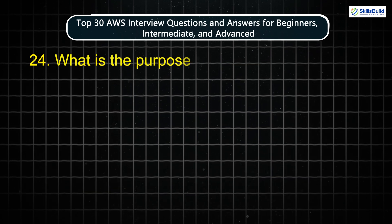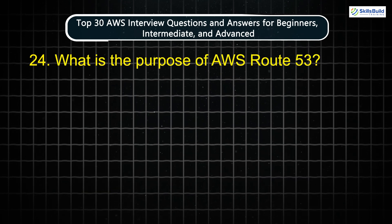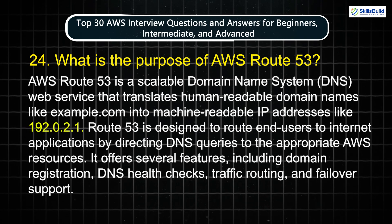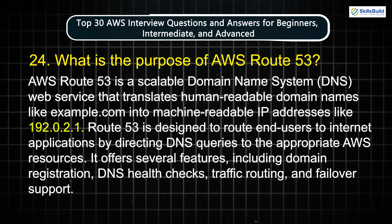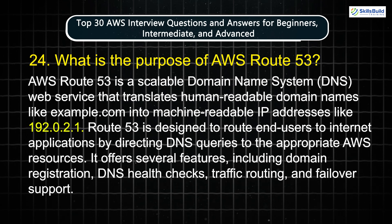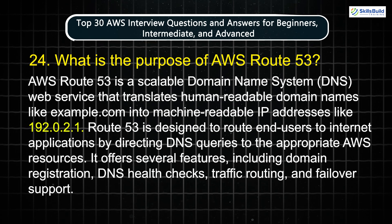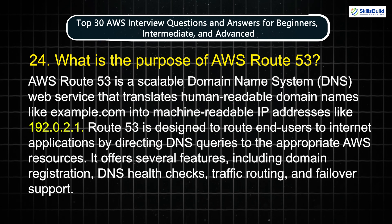Question 24: What is the purpose of AWS Route 53? AWS Route 53 is a scalable domain name system web service that translates human-readable domain names like example.com into machine-readable IP addresses like 192.0.2.1. Route 53 is designed to route end users to Internet applications by directing DNS queries to the appropriate AWS resources. It offers several features including domain registration, DNS health checks, traffic routing, and failover support.